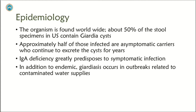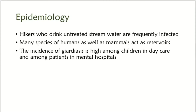Epidemiology: The organism is found worldwide. About 50% of stool specimens in the United States contain Giardia cysts. Approximately half of those infected are asymptomatic carriers who continue to excrete cysts for years. IgA deficiency greatly predisposes to symptomatic infection. Giardia cysts also occur in outbreaks related to contaminated water supplies; hikers who drink untreated stream water are frequently infected. Many species of mammals act as reservoirs. The incidence is high among children in daycare and patients in mental hospitals, as both groups cannot take good care of their hygiene.